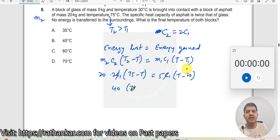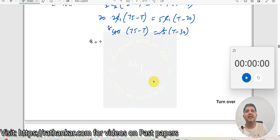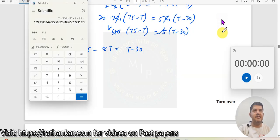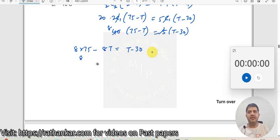I have this as 40 into 75 minus T is equal to 5 into T minus 30. Let us simplify this. This becomes 8 into 75 minus 8T is equal to T minus 30. So this goes that side, this becomes 8 into 75. What's the value of 8 into 75? 8 into 75 is 600. So this should be 600.